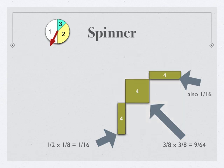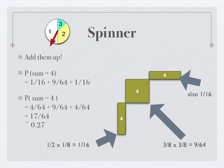So then all we have to do is add them up. The probability that the sum is four is one-sixteenth plus nine-sixty-fourths plus one-sixteenth. We look around for a common denominator, because we're adding fractions. Sixteen times four is sixty-fourths, so we multiply top and bottom by four in the sixteenth. So we get four-sixty-fourths plus nine-sixty-fourths plus four-sixty-fourths is seventeen-sixty-fourths.